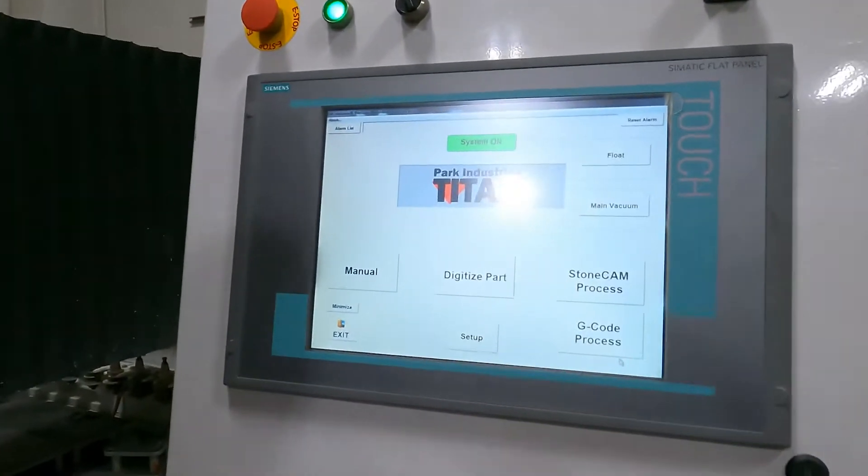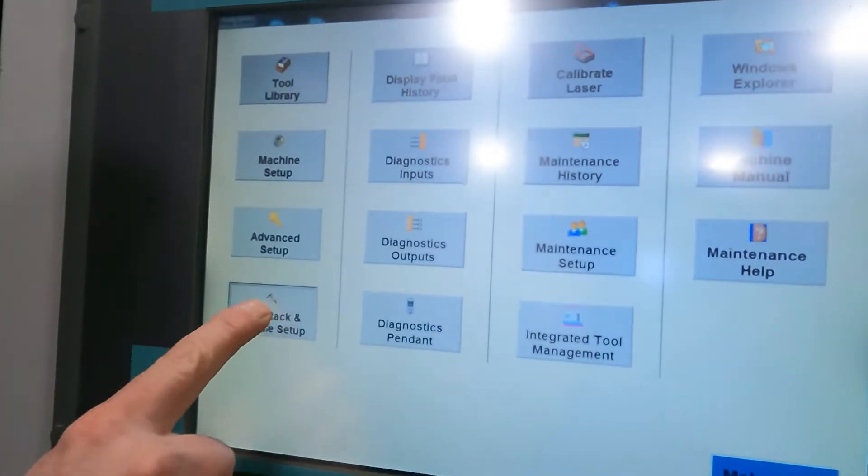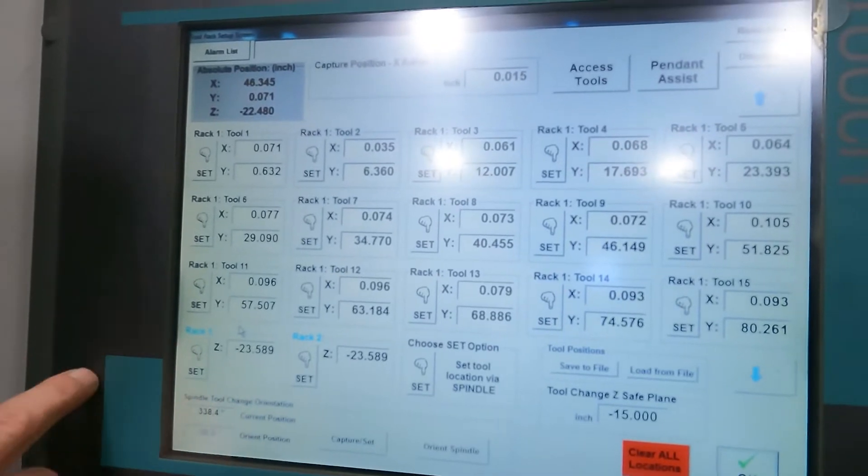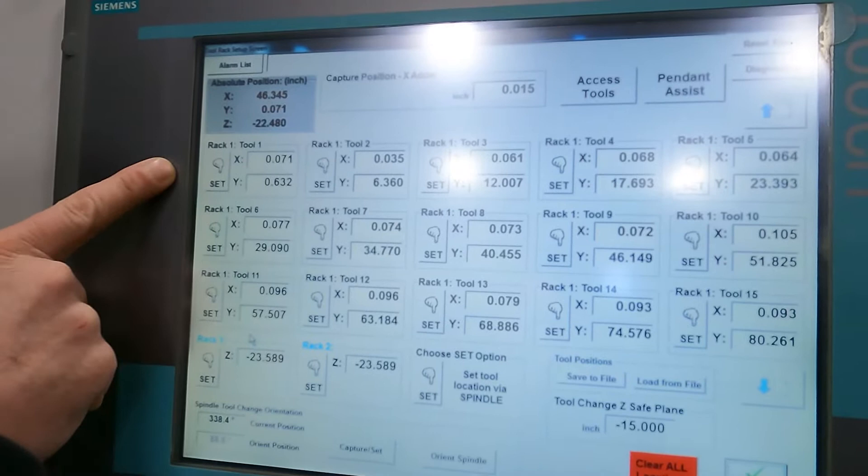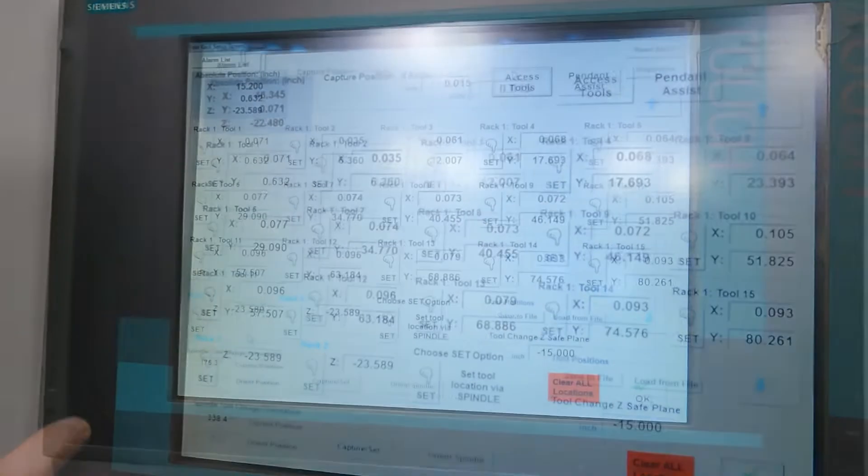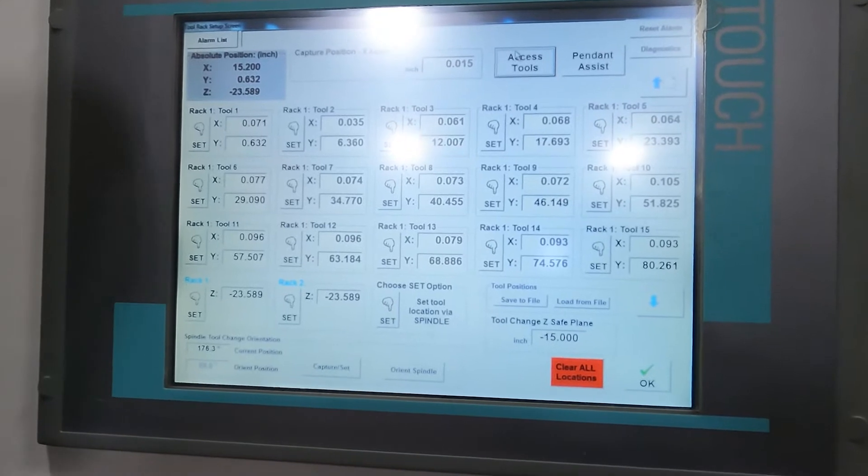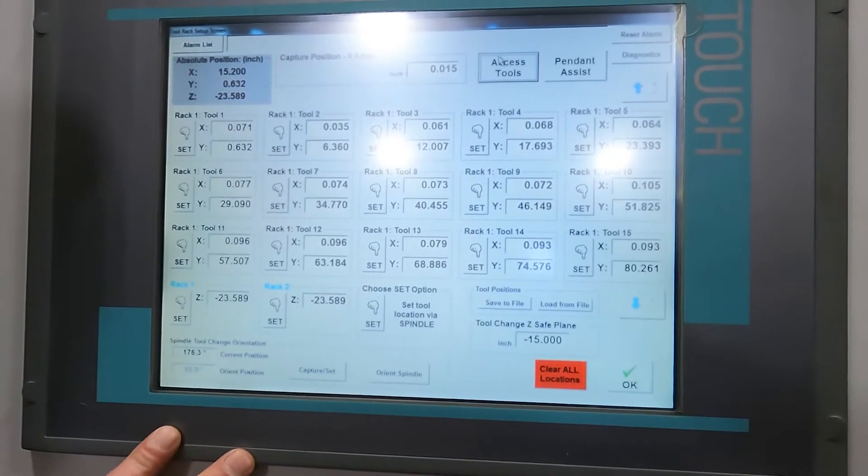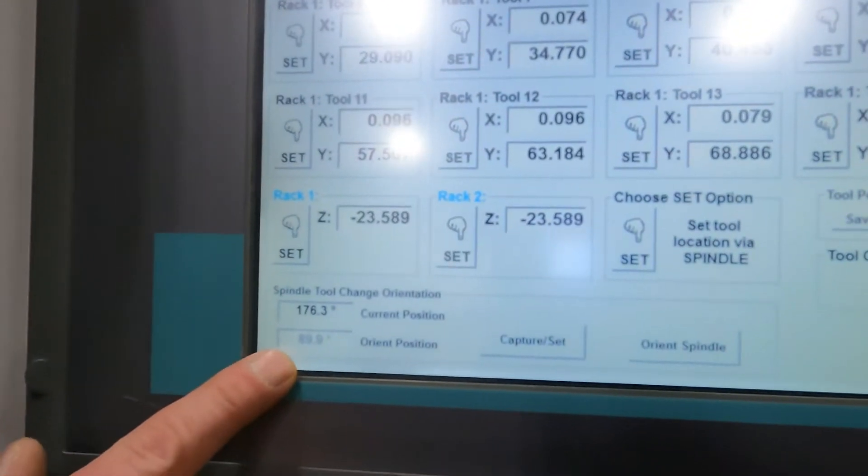So start out here, we're going to come to our screen. We're going to go to Setup and Tool Rack Setup. I'm going to be setting my orientation for the spindle in Tool Rack 1, Position 1 here. Before you enter your Tool Rack area and before you hit Access Tools, we do want to make sure we orientate the spindle. You can see here my orientation position is 89.9.